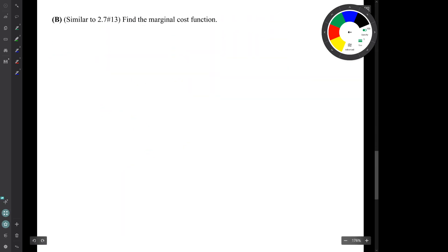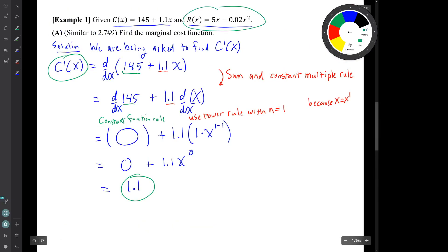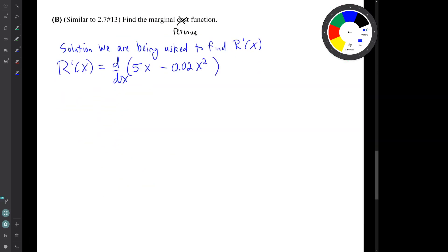Let's go on to part b. Part b has a typo in it. This should say marginal revenue. It's being asked to find the marginal revenue function. So again, this asks that you make the connection that marginal revenue means simply the derivative of revenue. So there I just simply brought in the revenue function that we were given at the start of the problem. The revenue function is 5x minus 0.02x squared. Now we use the sum rule and constant multiple rule again.